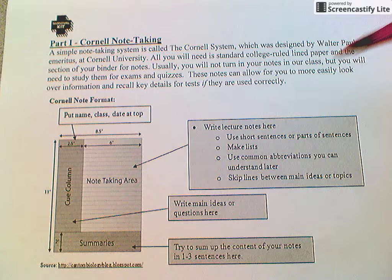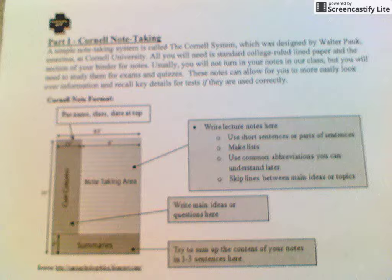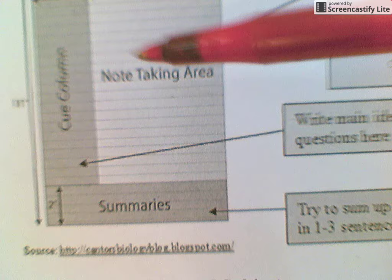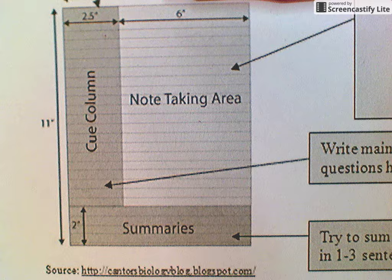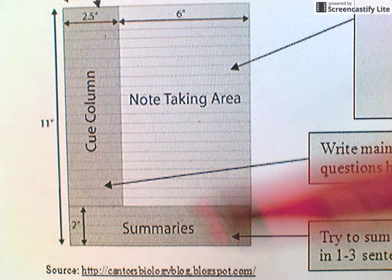Here's the overview of your paper. Go ahead and find another piece of paper and make it look like this. You need to have a cue column, a note-taking area, and a summary. Some students fold these areas; I like to draw a line. It doesn't really matter exactly how wide each section is, as long as you have a good area for note-taking, a good cue column, and a decent area for summaries.